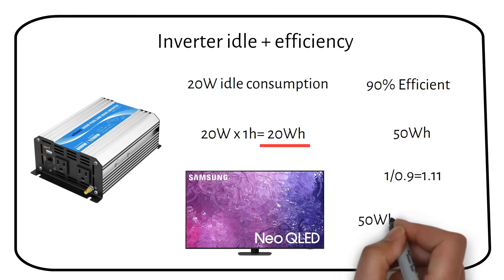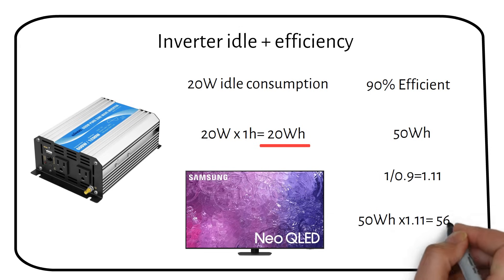So we become an hourly power consumption of 56 watt hours to run the TV. Are you still with me? After this step we are going to put everything together in one calculation.